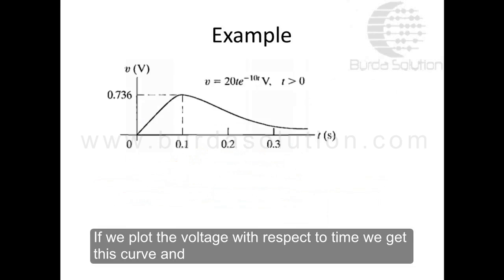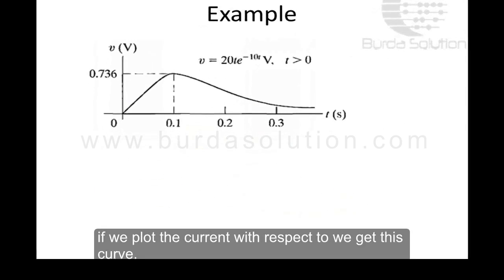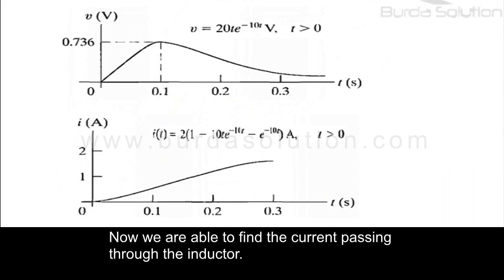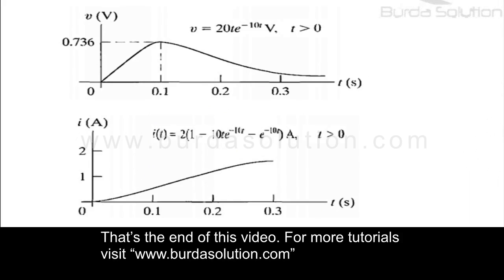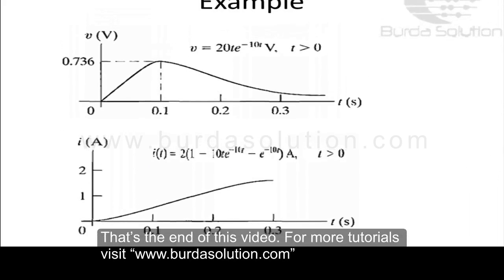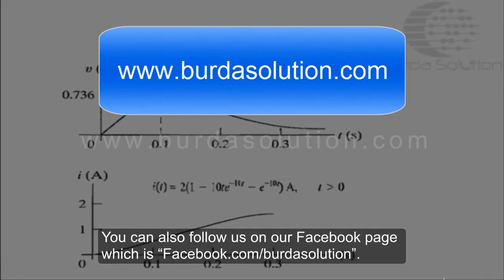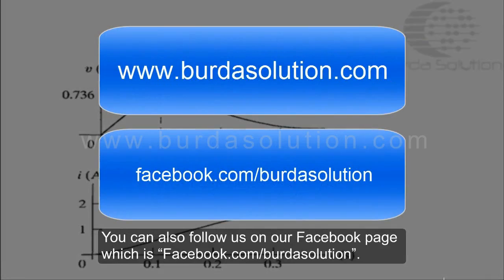If we plot the voltage with respect to time, we get this curve. And if we plot the current with respect to time, we get this curve. We are now able to find the current passing through the inductor. That's the end of this video. For more tutorials, visit www.burdasolution.com. You can also follow us on our Facebook page at facebook.com/burdasolution.